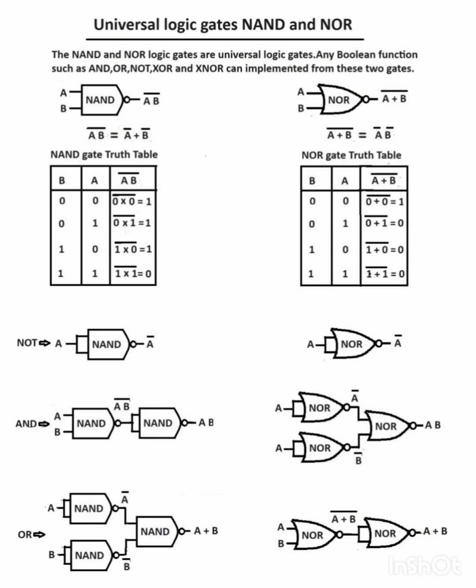A and B are the inputs of the NAND gate, and it outputs the complement of AB. The symbol for the NAND gate and the symbol for the NOR gate are given here. Truth tables for both the NAND gate and the NOR gate are also given here.